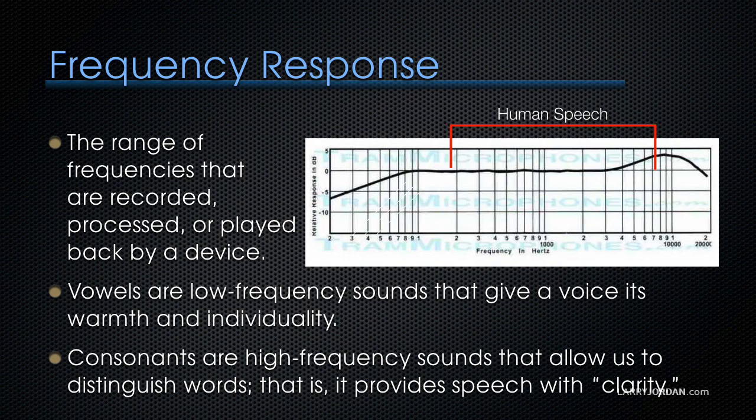This is a logarithmic chart starting at 20 cycles at the low end to 20,000 cycles at the high end. We can see that it rolls off a bit below about 100 cycles. Then it's flat from 100 cycles to about 4,000 cycles, and it has a bump in the high frequencies from say 5,000 to 10,000 cycles, and it rolls off again from 10,000 to 20,000.